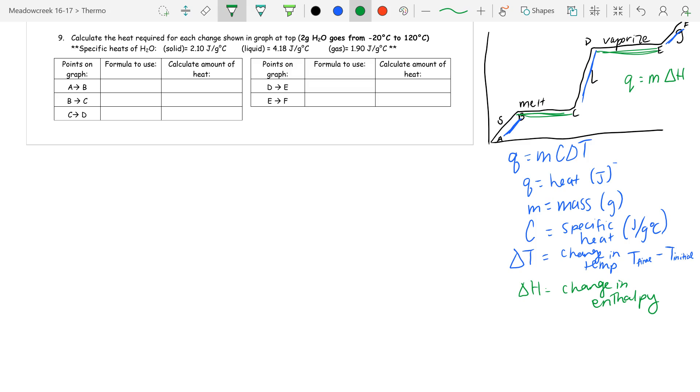So if we look at this problem number nine, which is at the bottom of the back of your notes, it says calculate the heat required for each change shown in the graph, where we have two grams that goes from negative 20 to 120. And at this point, this is when you should always, always, always draw and label your graph. It is very difficult to do this and not make any mistakes if you don't have an actual graph to look at. Because we know that if I have water, negative 20 is going to be down here. And we know that water starts to melt at zero degrees Celsius, and then it starts to vaporize at 100 degrees Celsius, and that we are going to be stopping somewhere when it's a gas at 120 degrees Celsius.